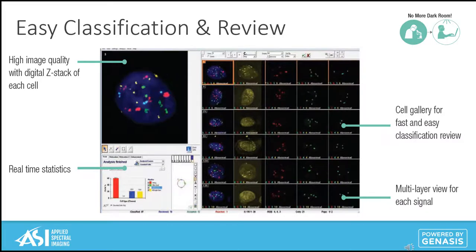Switching fields now over to pathology — pathologists study structural, biochemical, and functional changes in cells, tissues, body fluids, and organs for underlying diseases. Subdivisions of pathology include histopathology, cytopathology, hematology, and molecular pathology. ASI specializes in software to facilitate the needs of histopathologists and molecular pathologists.